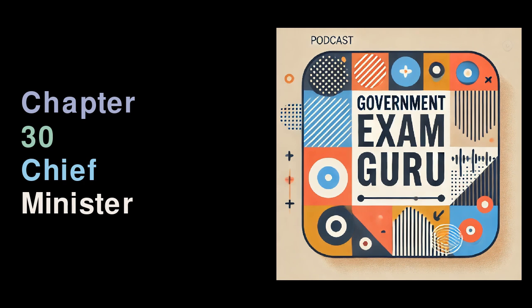Powers of the Chief Minister in Relation to the Governor: In the Indian political system, the chief minister plays a crucial role in liaising with the governor of the state. This relationship is essential for smooth governance and functioning of the state administration. The chief minister serves as the main channel of communication between the governor and the council of ministers. This means that all important information, decisions, and proposals concerning the state's governance must be conveyed through the chief minister.